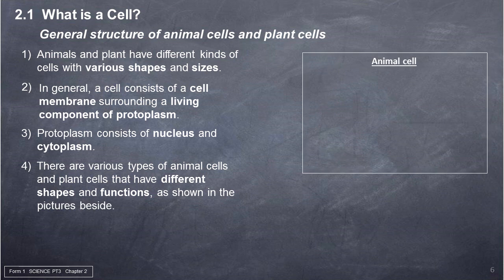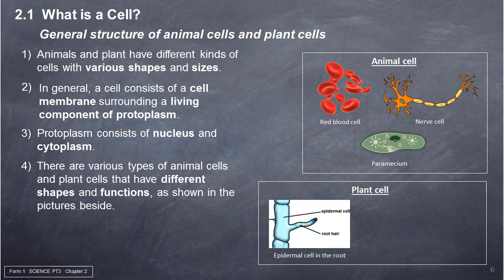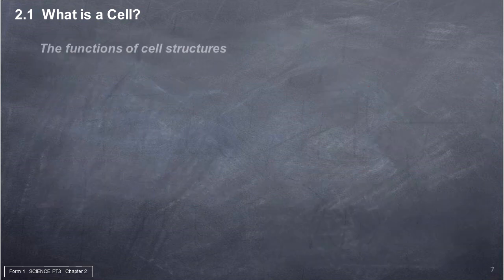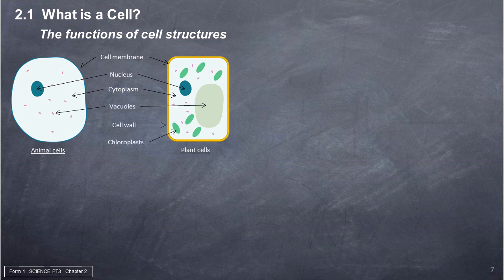Animal cells include: red blood cell, nerve cell, and Paramecium. Plant cells include: epidermal cell in the root, guard cell, and palisade cell. The functions of cell structures include: cell membrane, nucleus, cytoplasm, vacuoles, cell wall, and chloroplasts.